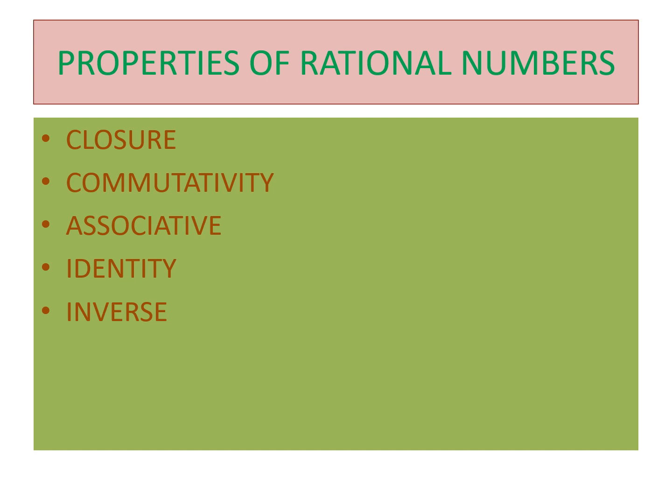Now let's see the properties of rational numbers. We have closure property, commutative property, associative property, identity, and inverse. We have already seen these properties in lower classes with whole numbers, integers, and natural numbers.